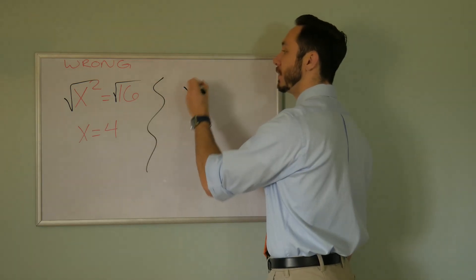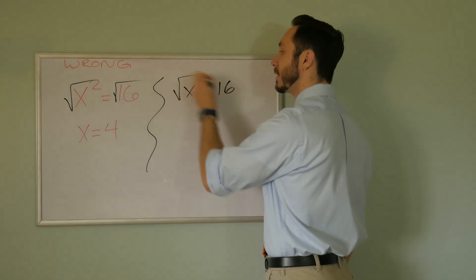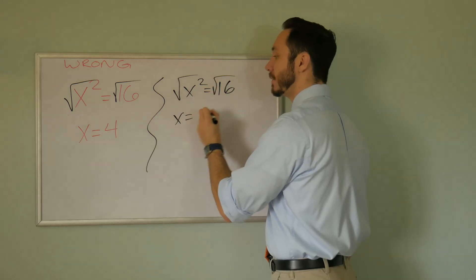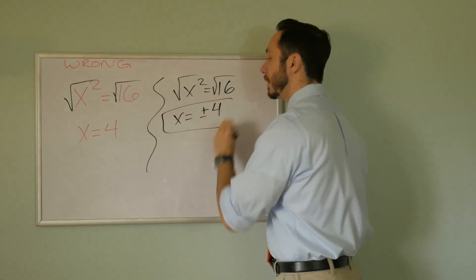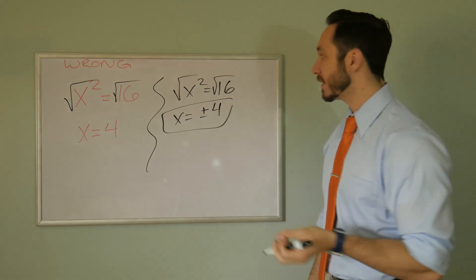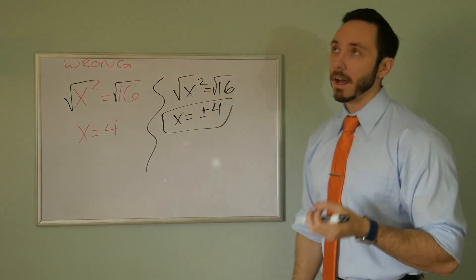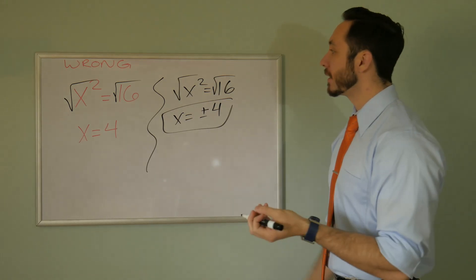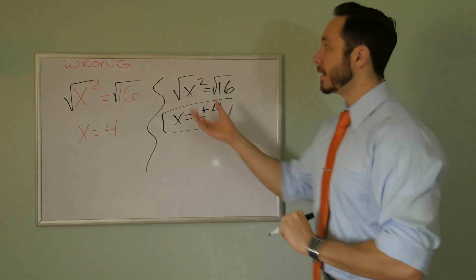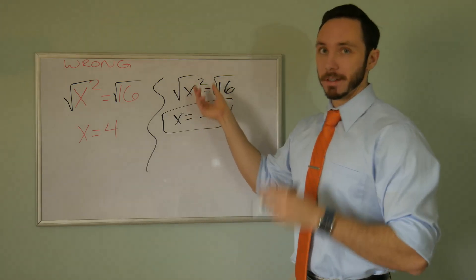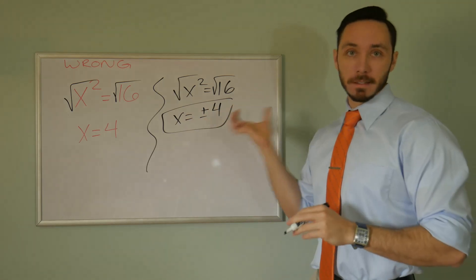Really, their process was right. If you have x squared is equal to 16, sure, you can take the square root of both sides. We just have to remember the plus or minus. When you take the square root in solving and you have an even power, you need to remember that both four squared and negative four squared — a negative times a negative is a positive — is equal to 16.